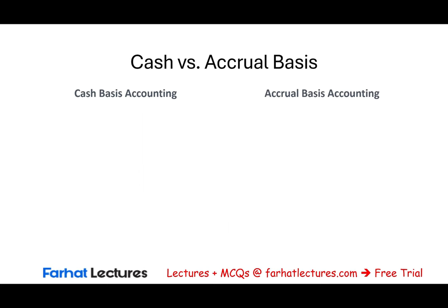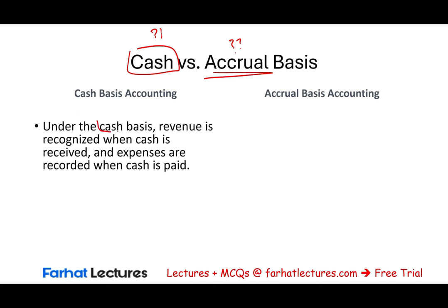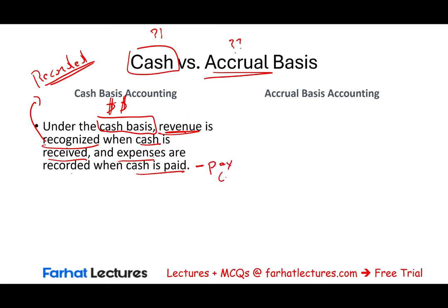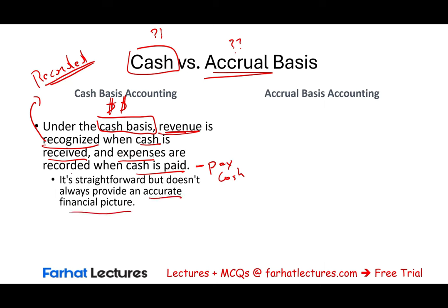Another concept we need to learn about is cash versus accrual basis, which determines when we recognize revenue. Under the cash basis, revenue is recorded when cash is received and expenses are recorded when cash is paid. It's straightforward — if you have the cash in hand, it's revenue; if you don't, it's not. But this does not provide an accurate financial picture, because companies do a lot of work on credit and purchase goods and services on credit.